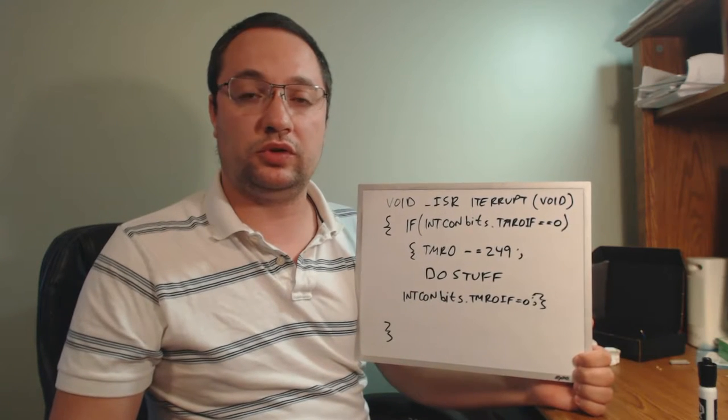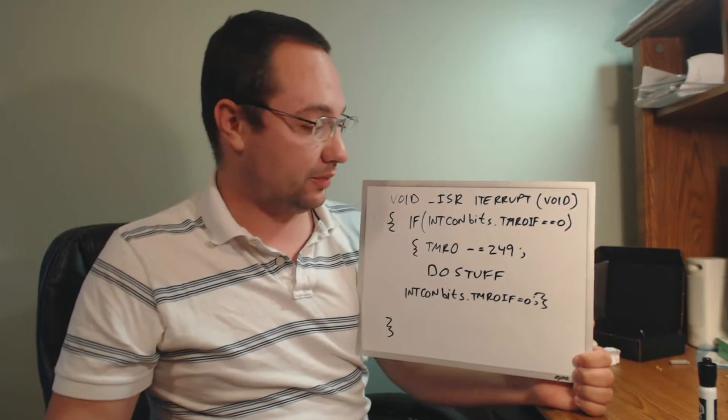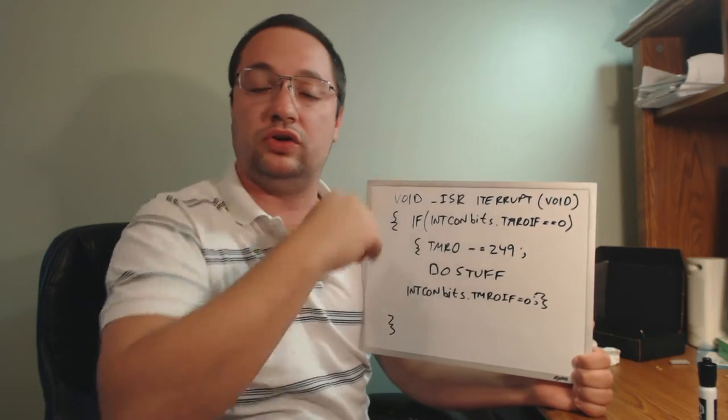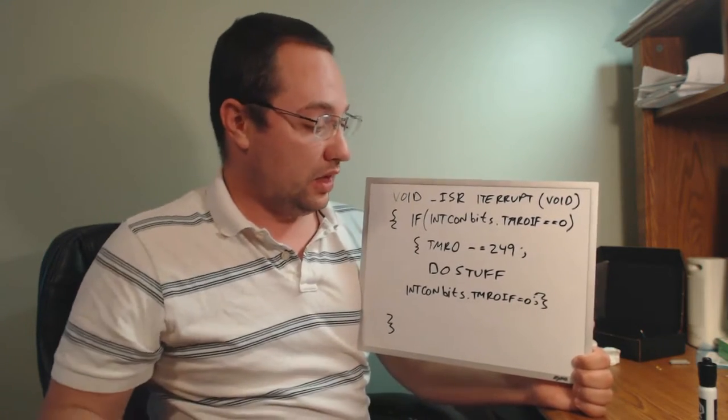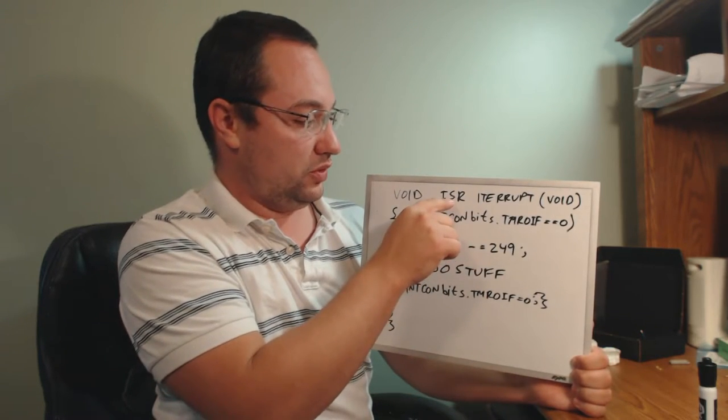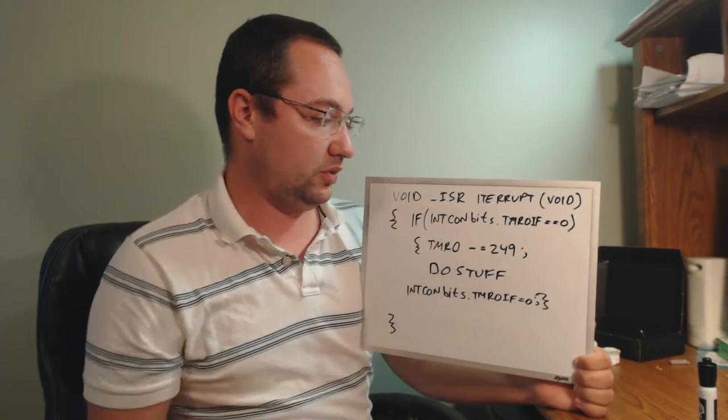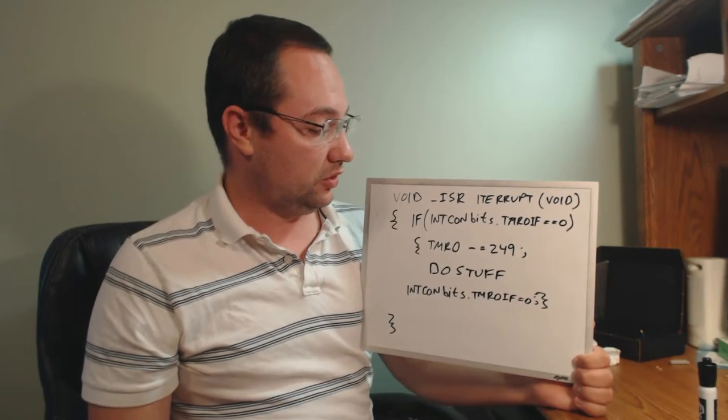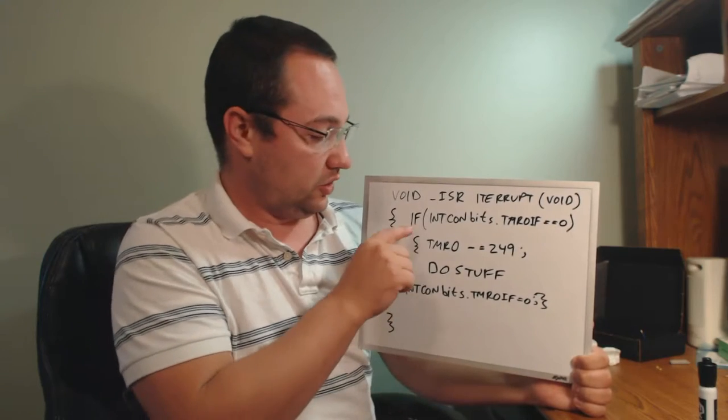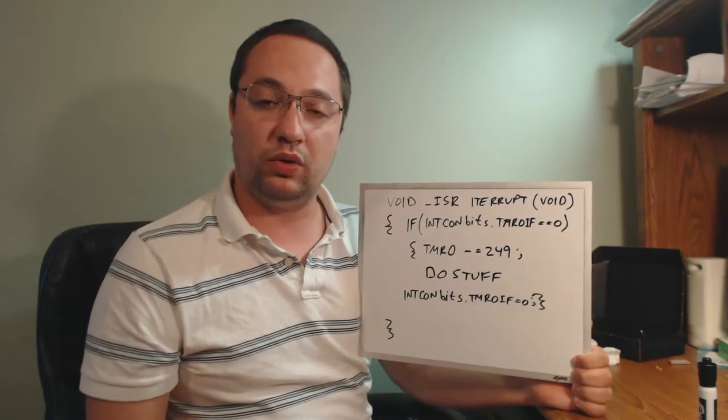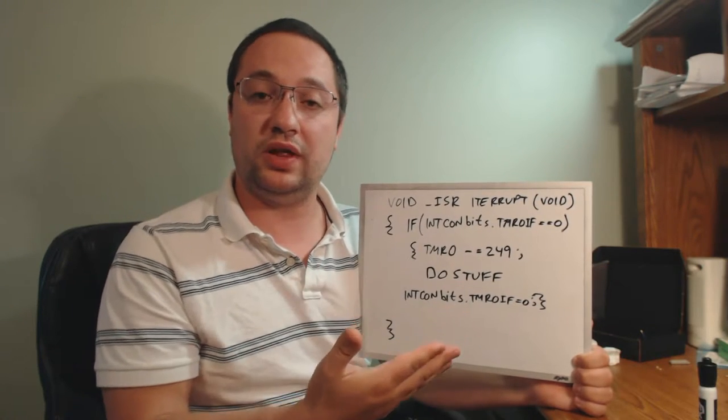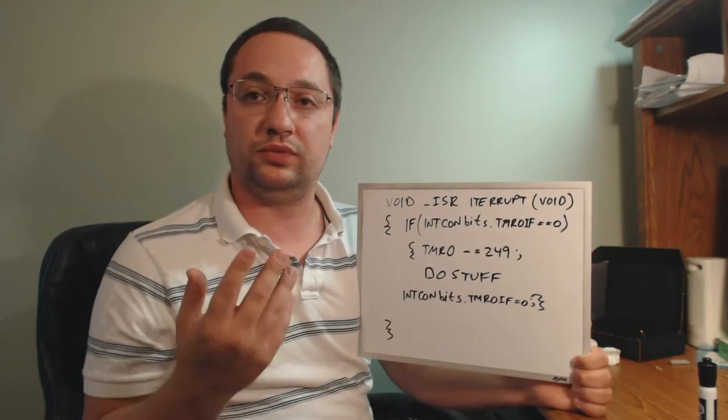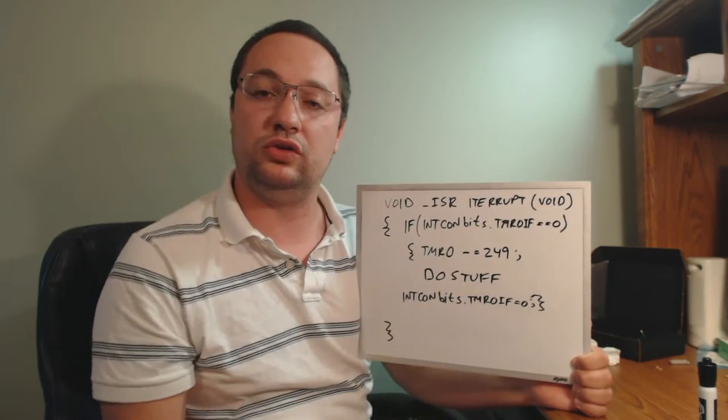But let's use the example we had previously because we want to do one millisecond with a one megahertz FOSC, which is one microsecond. FOSC over four is four microseconds and one millisecond divided by four microseconds gives you a count of 250. So how would you use this to get the timer to overflow to be able to trigger the flag? Because the flag triggers whenever the timer overflows. It goes from 0xFF back to all zeros. And one way of doing it is you could do TMR zero equals 5 and then let it count up from there.